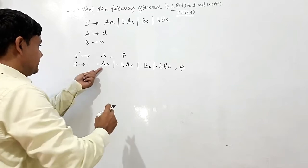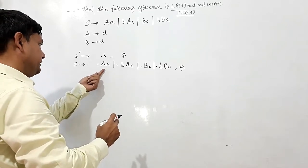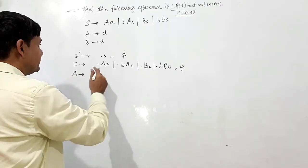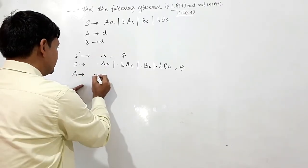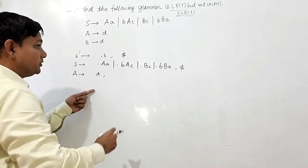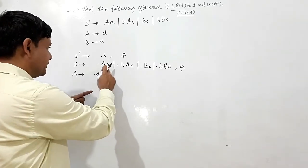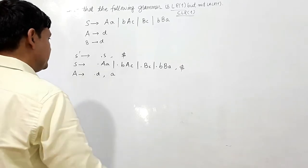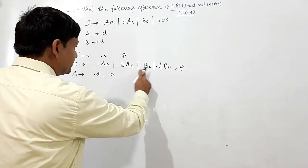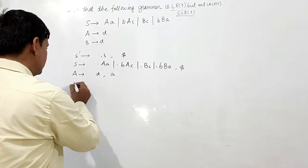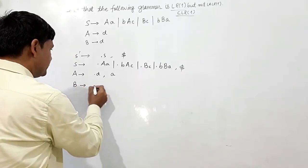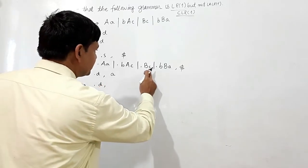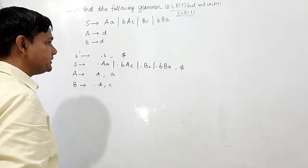Now this dot is coming before A, which is a non-terminal, so I have to write the production of A. This will be dot B. And what is remaining after this A? This is small 'a', so it will be the lookahead. Now dot is coming before B, so I have to write its closure. It will give dot D. And what is remaining after this B? This is C, so I will write C as the lookahead.